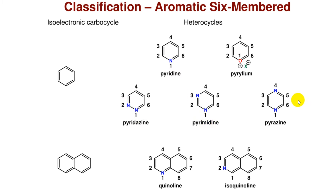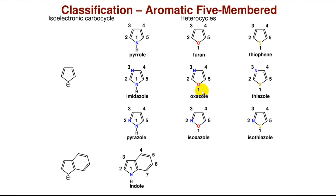Pyrazine has nitrogen at the 1 and 4 positions. Pyridine is an isoelectronic analogue to quinoline and isoquinoline. Classification — aromatic five-membered: the cyclopentadienyl anion is the isoelectronic analogue to five-membered aromatic compounds. Examples include the following heterocyclics: pyrrole, furan, and imidazole.